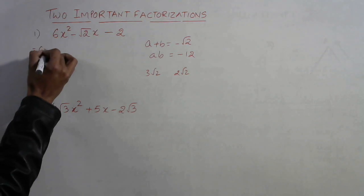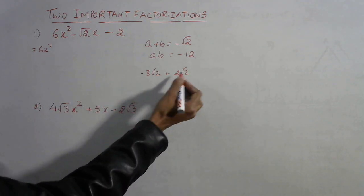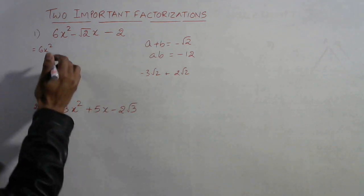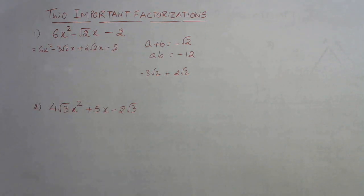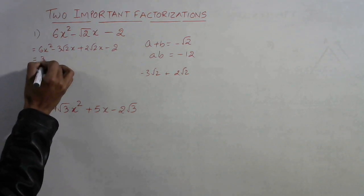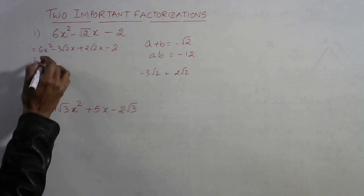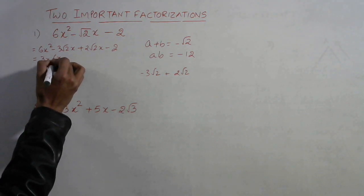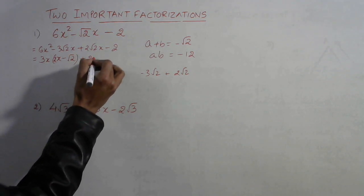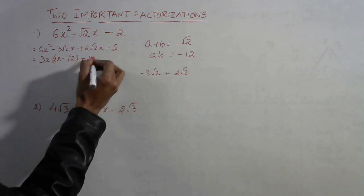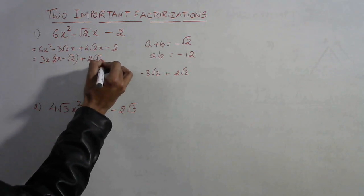Let us see, 6x square, now minus means the larger one will be negative and smaller one will be positive. So minus 3 root 2 x plus 2 root 2 x minus 2. Now in these two terms we can take 6 and 3 means 3 common. So we will have a root 2 here and in these two we have 2 common. So if you take 3 common in this, this will be 3 and another x is also common. So we will have x also and 2x minus root 2. Likewise here 2 common and if you take 2 common then this will be root 2 x minus 1.